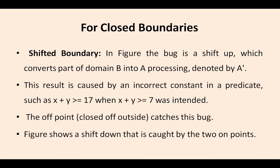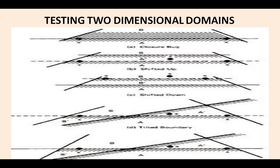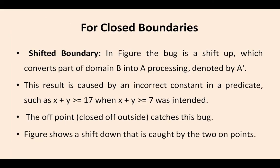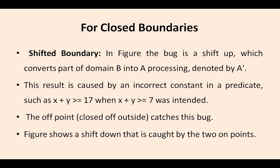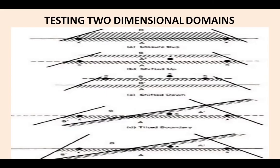Next one is shifted boundary. The buggy boundary is shifted up — you can see the figure is shifted up here. The result is caused by an incorrect constant in the predicate. The off point catches this bug, and the figure shows the shift down is caught by two on-points. Two on-points are there and one off point is there in this example — this is shifted up and this is shifted down.